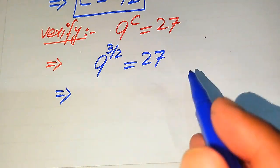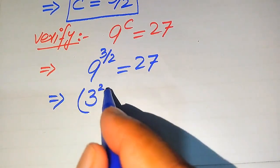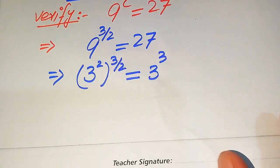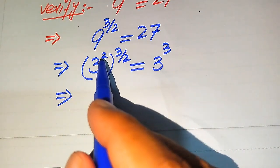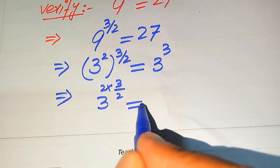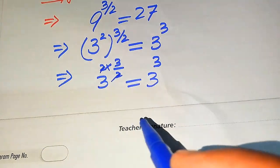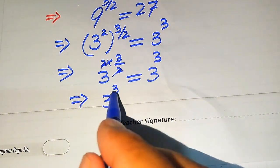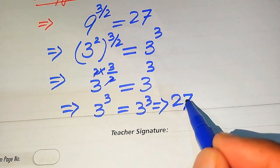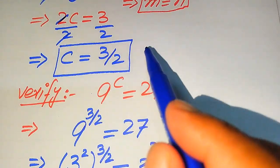We write the bases on both sides in prime factor form: the prime factors of 9 give us 3 squared, with whole power 3 over 2, and we write 27 as 3 cubed. We then multiply the two exponents: 3 to the power of 2 multiplied by 3 over 2 equals 3 to the power of 3. The 2s cancel out and we get 3 to the power of 3 equals 3 to the power of 3, which means 27 equals 27.